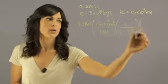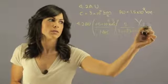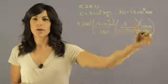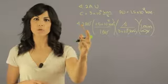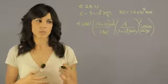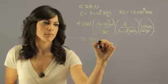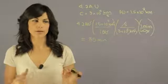And then we know that there are 60 seconds in one minute. That means if we multiply all of this together we should get how long it takes light to travel 4.2 astronomical units in minutes. And the answer for this is about 35 minutes. So you can plug this into your calculator and test it out yourself.